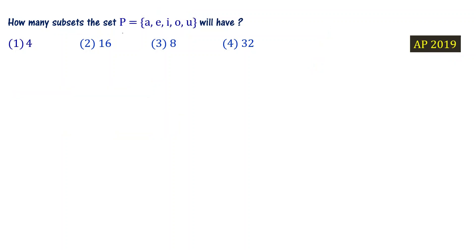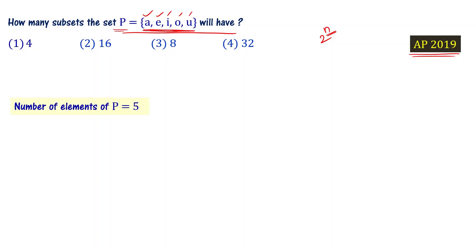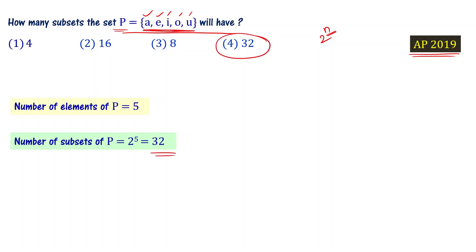How many subsets does set P have? P is a set with elements 0, 1, 2, 3, 4, A, E, I, O, U. The number of elements in the set is 5. Using the formula 2 power n, the number of subsets = 2 power 5 = 32. So choice 4 is the right answer.